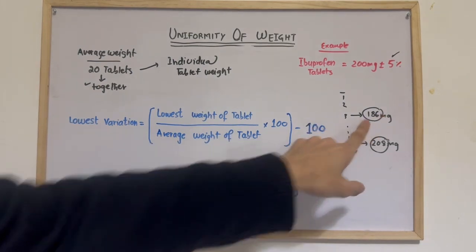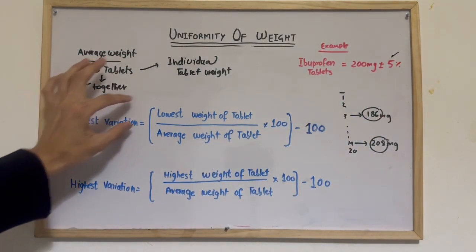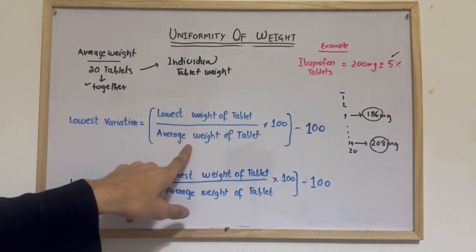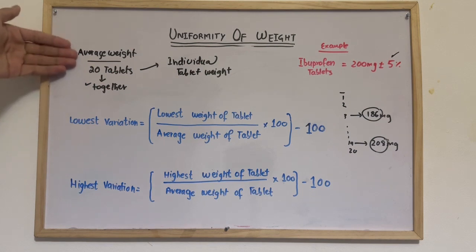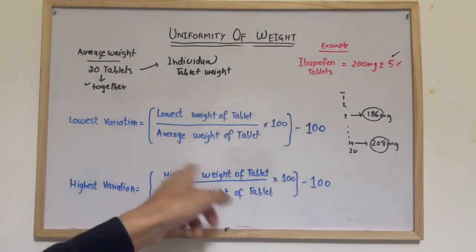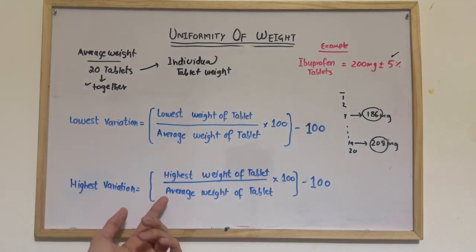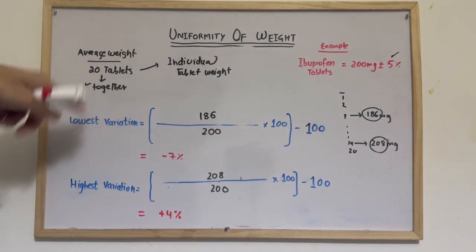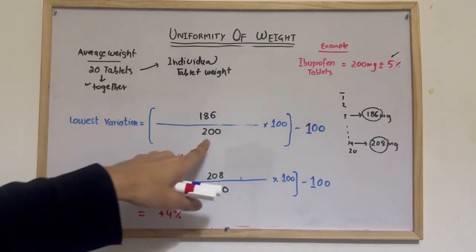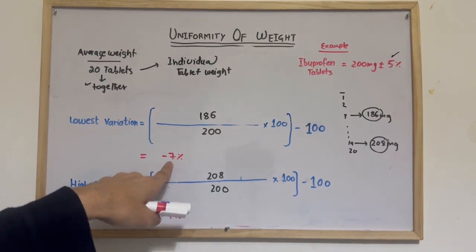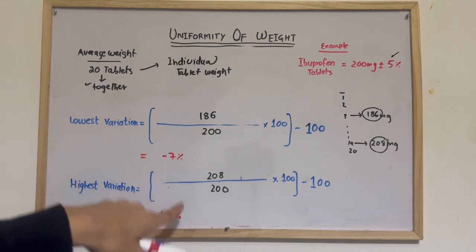For the lowest variation, take the lowest weight of the tablet — 186 mg — divide by the average weight (200 mg, calculated from 20 tablets together), multiply by 100, then subtract 100. When we use the calculator we get a value of minus seven percent.